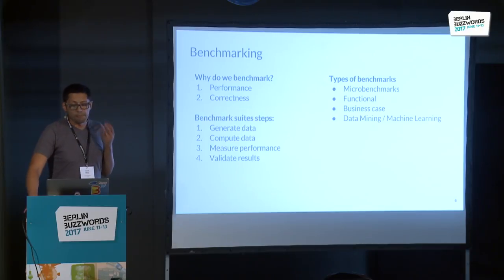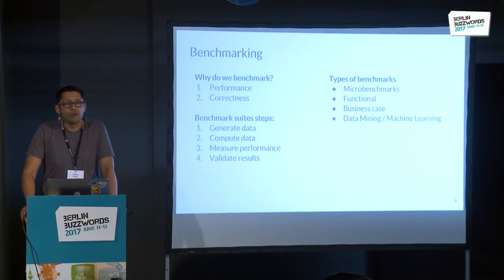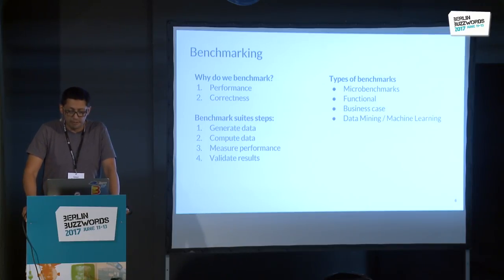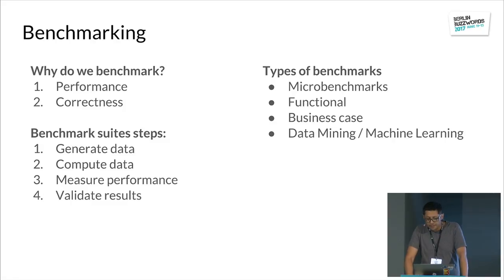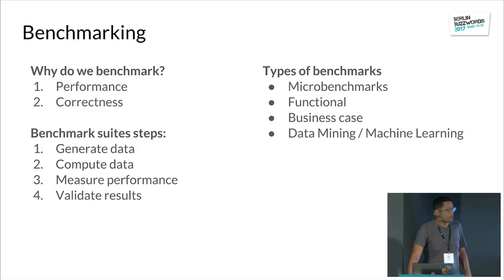We have different types of benchmarks — this classification is mine. We have micro benchmarks that measure one specific point of performance, for example, how much it costs to serialize data. We have functional benchmarks, like measuring a join between two distributed tables. We have business case oriented benchmarks, like the TPC-DS suite, where we take a business case such as a decision system and create queries from it. And more recently, we have data mining and machine learning jobs to train a model and measure system performance.